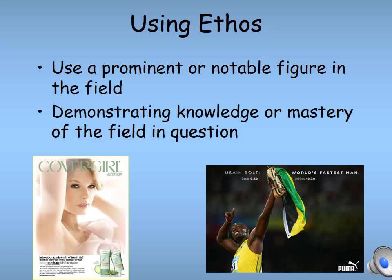Ethos can be seen in advertisements everywhere. Large companies will often hire a notable figure like a celebrity athlete or a doctor to endorse their product. For example, if Taylor Swift is endorsing CoverGirl, people might think, 'If Taylor Swift wears CoverGirl, I should too.' Since she wears a lot of makeup, people may see her as a trustworthy source when choosing the right makeup, making them more likely to buy a CoverGirl product.